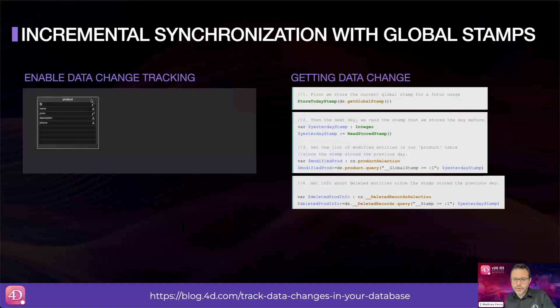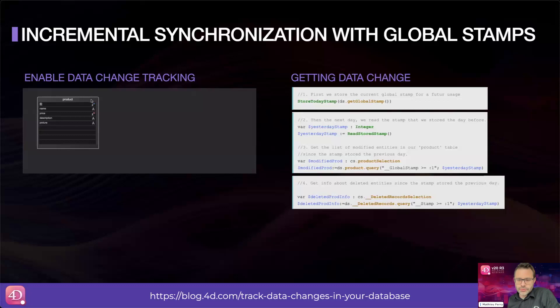Now we'll talk about incremental synchronizations with global stamp. Before going further, let me explain what we mean by global stamp. A stamp is a marker — it's a tool used to track data modifications on entities. It helps maintain a history of changes made to your data. We introduced global stamps with 4D Mobile a while ago to enable incremental synchronization between 4D and mobile devices, and now we are making this functionality available for your other needs.